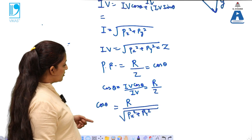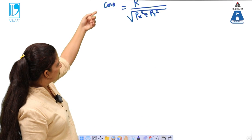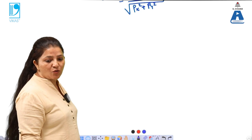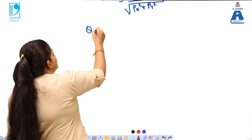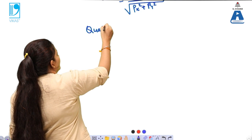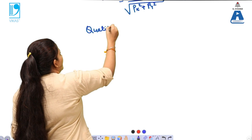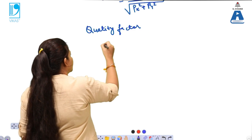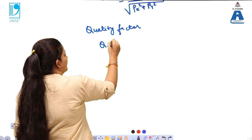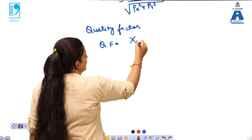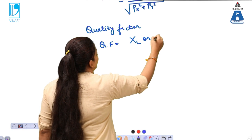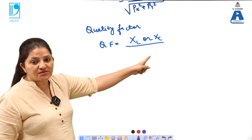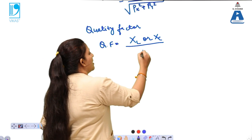Next is quality factor. Now what is the quality factor? Quality factor is given by Q, that is equals to XL or XC, that is the reactance for the inductor or the capacitance, divided by R.